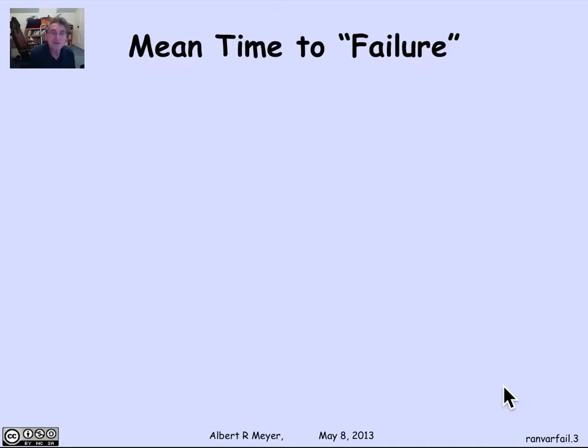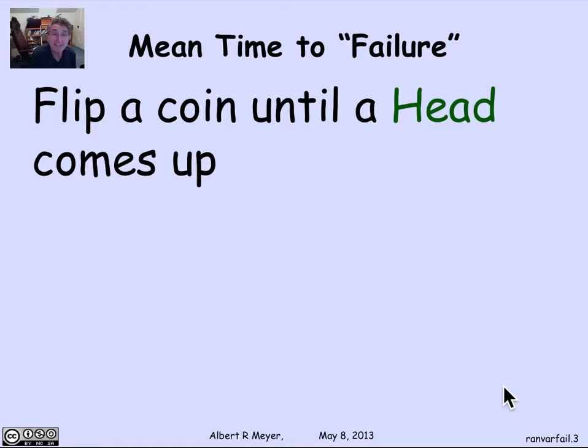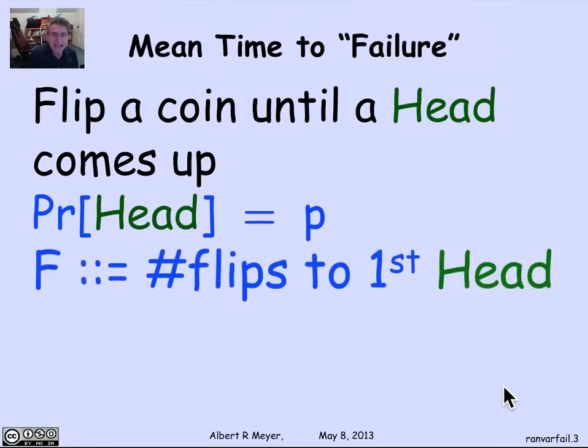The mean time to failure problem we can formalize in terms of flipping coins. So we're going to flip a coin until a head comes up, and we're going to think of a head as being a failure and a tail as a success. Let's assume the probability of getting a head, the probability of failure, is P. Again, this is not a fair coin. It's a coin that may be biased in either direction. And let's let F be the number of flips until the first head comes up, the number of flips until the first failure. And if we're counting flips as time, it's the time to fail.